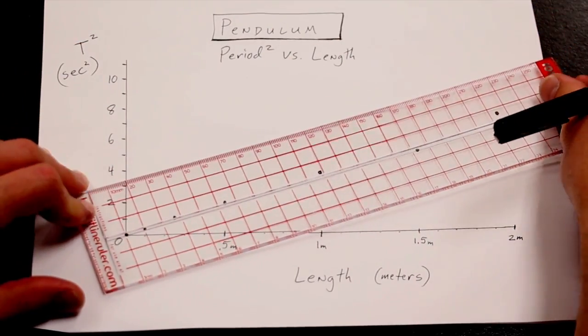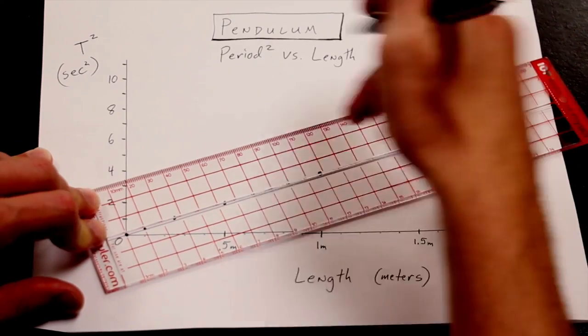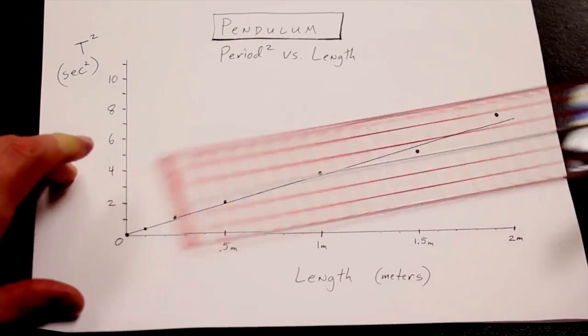If you square the period and graph it versus the length, you'll see that indeed it is a straight line, which is an experiment I advise you do.